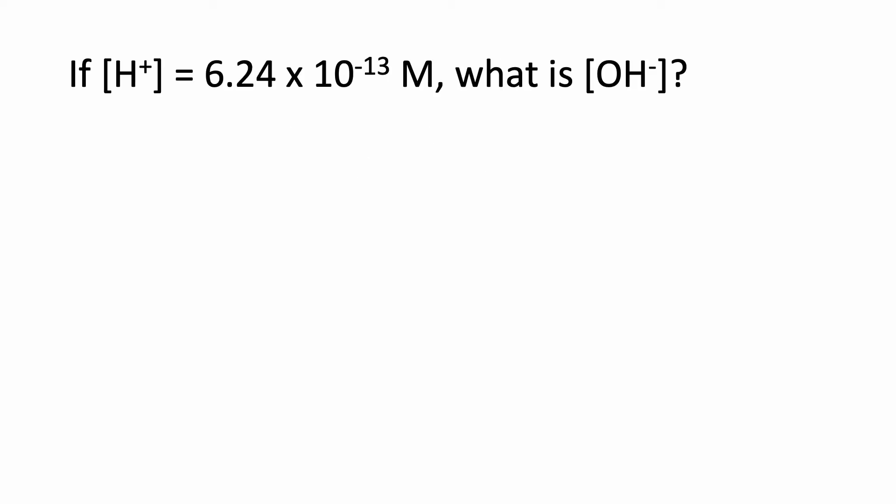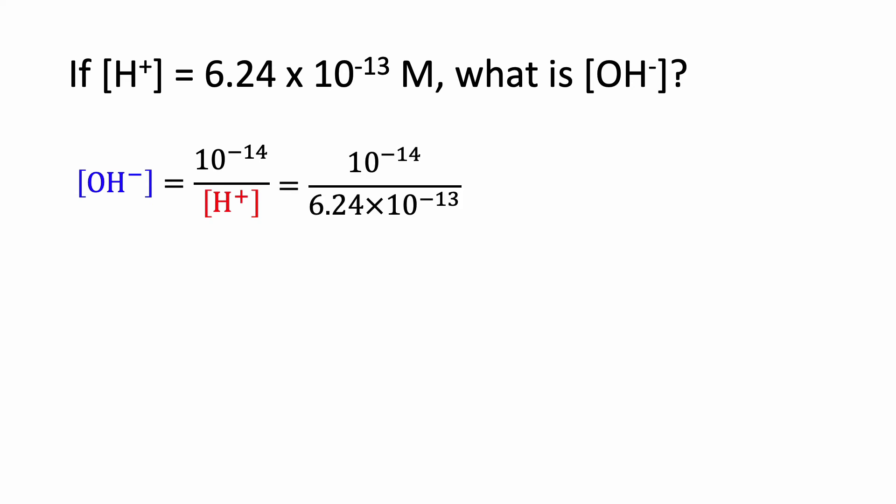Now let's look at the reverse calculation — given OH-, calculate H+. Here's our equation; let's plug in the OH- concentration. You can see that we started with a very tiny concentration of H+, and that usually means we're going to have a relatively large concentration of OH-. And indeed, when we run the numbers through our calculator, we get 1.60 times 10 to the minus 2.